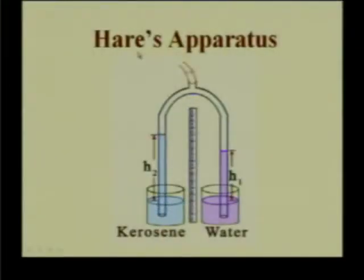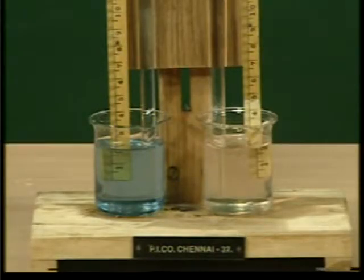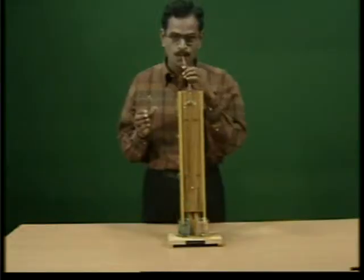The other parameters in the formula are ρ2/ρ1 — the relative density of the lighter liquid kerosene with respect to water — and also the radius of the tube. To find ρ2/ρ1, we use Hare's apparatus. The limbs of Hare's apparatus are immersed in beakers containing kerosene and water.